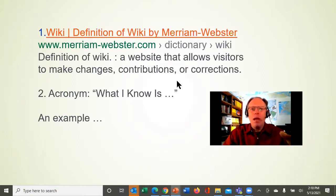The definition from Merriam-Webster, and when you think of Wikipedia, this makes sense. It's a website that allows visitors to make changes, contributions, or corrections. So the model of Wikipedia is that people can log into the site and add additional information on the wiki pages that have been created.